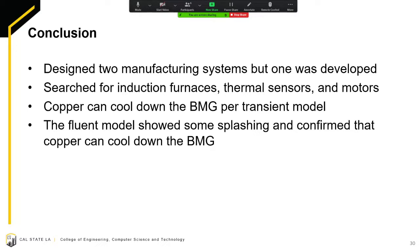To conclude the presentation, the objective of the project is to develop a manufacturing system for bulk metallic glass wires. The design team designed two manufacturing systems, one to manufacture wires and another to manufacture springs. However, due to time constraints, the team was only able to develop the wire design. The electrical team was tasked with searching for an induction furnace, thermal sensors, and motors. At this time, there was no induction furnace that was found that was within budget and followed the guidelines that the school provided. The simulation team simulated a transient heat transfer model and a fluid dynamics model. The transient model verified that the copper mold can cool down the BMG. The fluid dynamics model showed some splashing. The splashing indicates that the speed needs to be reduced. The simulation also showed that the copper mold was able to cool down the BMG at a higher rate than the critical cooling rate.